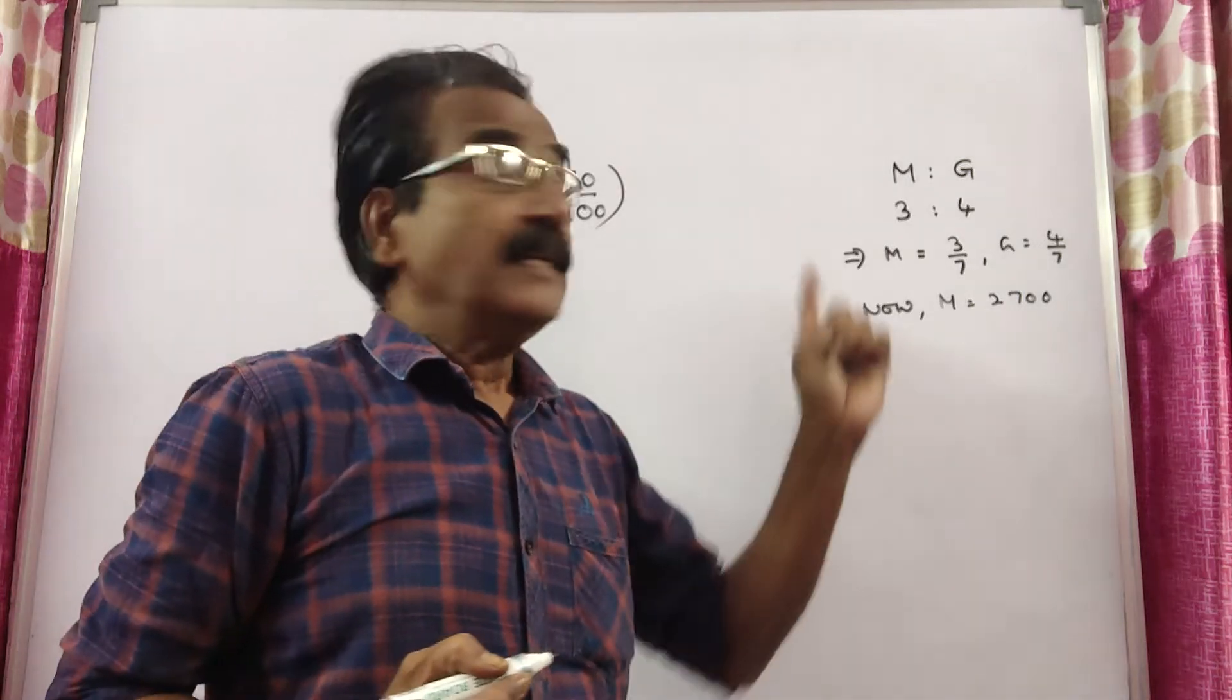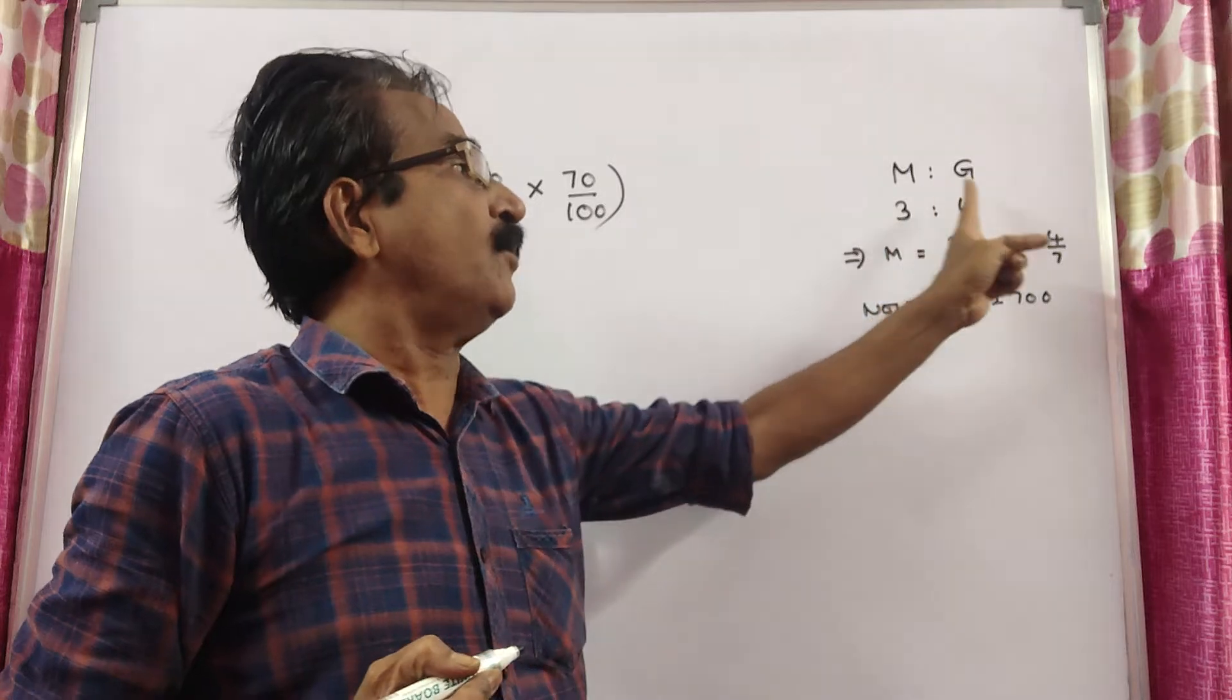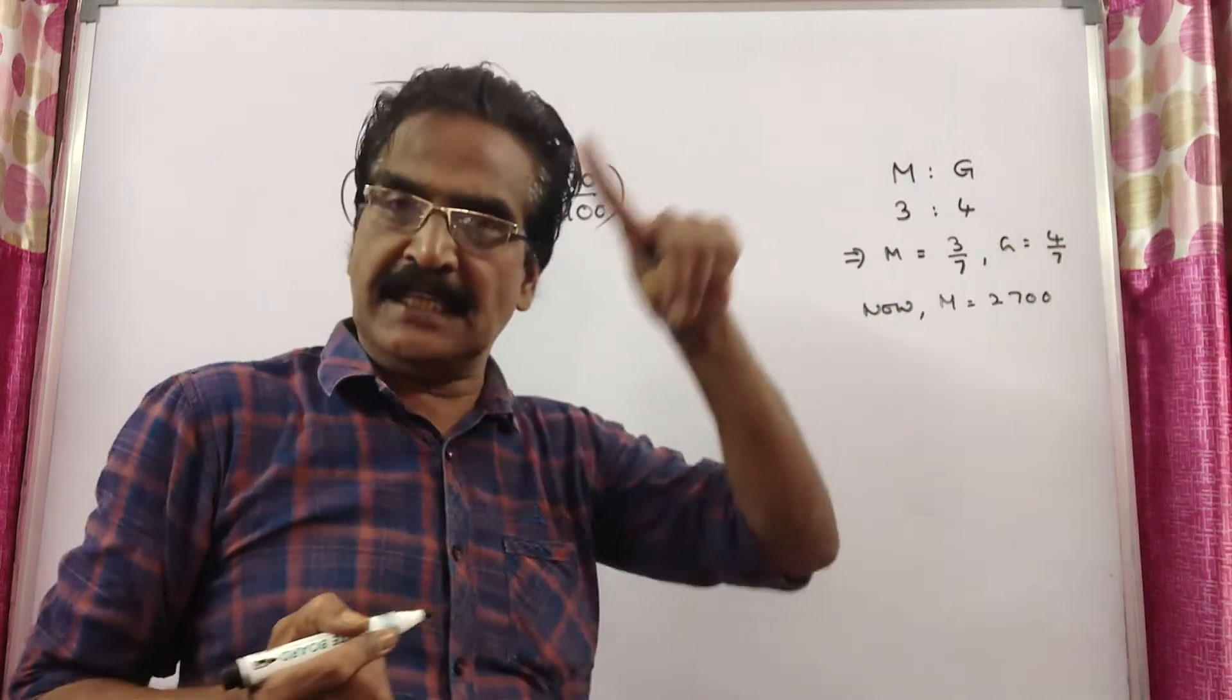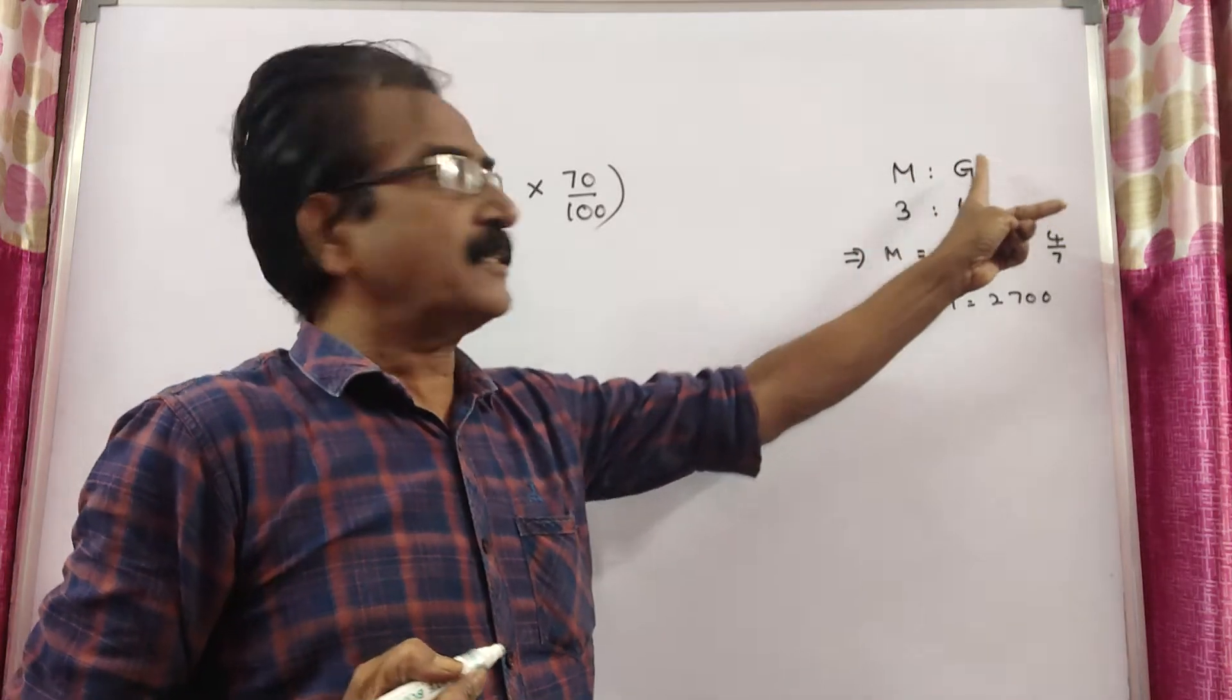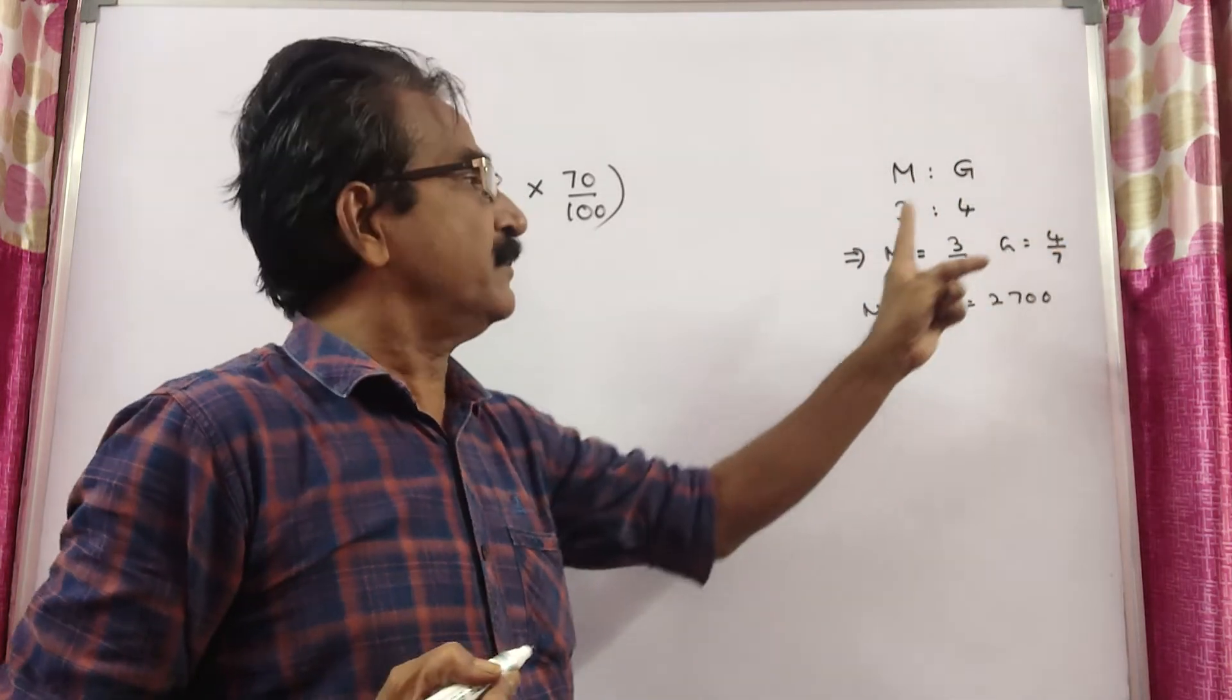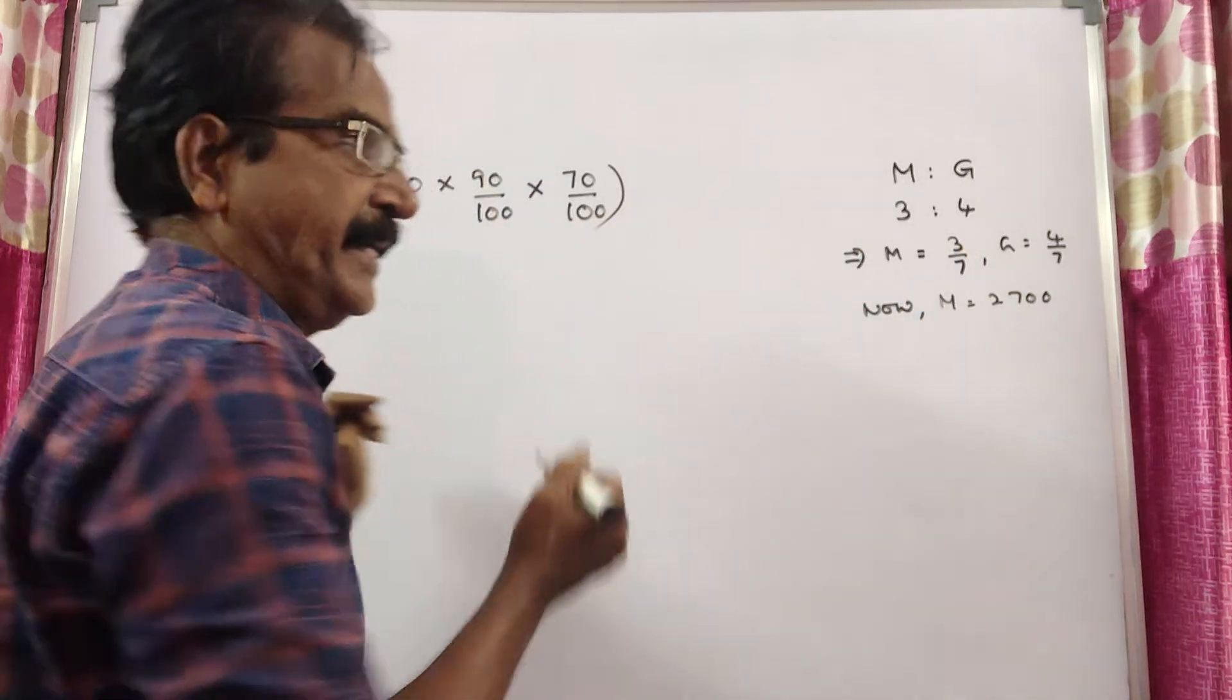The expenditure on medicine and groceries are in the ratio 3 to 4 in the remaining salary after savings. So the expenditure on medicine is 3/7 of the remaining salary.